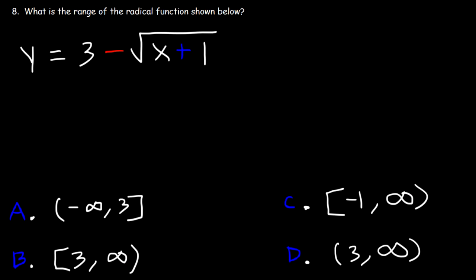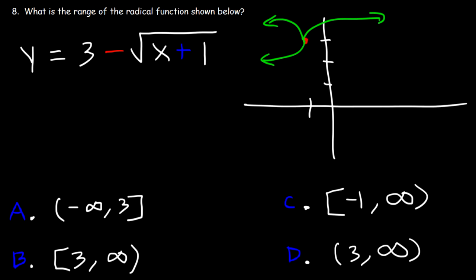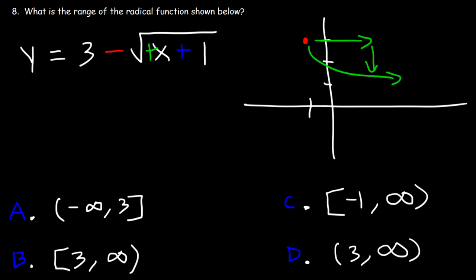Number 8. What is the range of the radical function shown below? Let's draw a graph. We know it's going to shift one unit to the left due to x plus 1 — if you set x plus 1 equal to 0 and solve for x, you get negative 1. And it's shifted up three units, so the new origin starts at negative 1 comma 3. Notice that we have a negative in front of the radical, which would reflect over the x-axis. We have a positive sign in front of x, so it's going to go towards the right, and the negative in front of the radical means it's going to go down — towards quadrant 4.